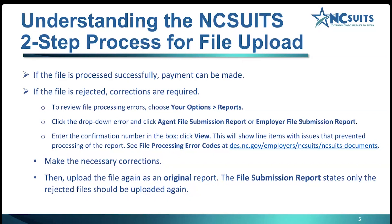Choose the agent or employer file submission report depending on how you are logged in, and enter the confirmation number. That confirmation number can be found in those emails, or I'll also show you where to find it under the file submission summary. Once you hit View, you can see any rejections or reasons for rejection — these are processing error codes, which can also be found on our website. If needed, make the necessary corrections, upload the file again as an original report, and go through that process again.